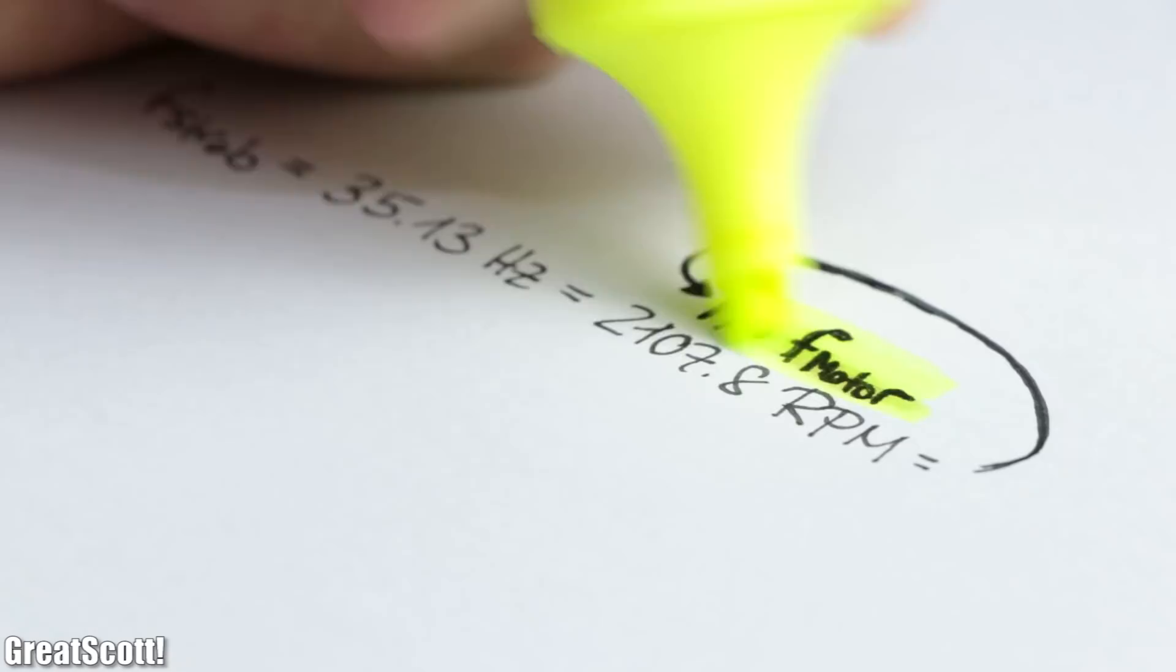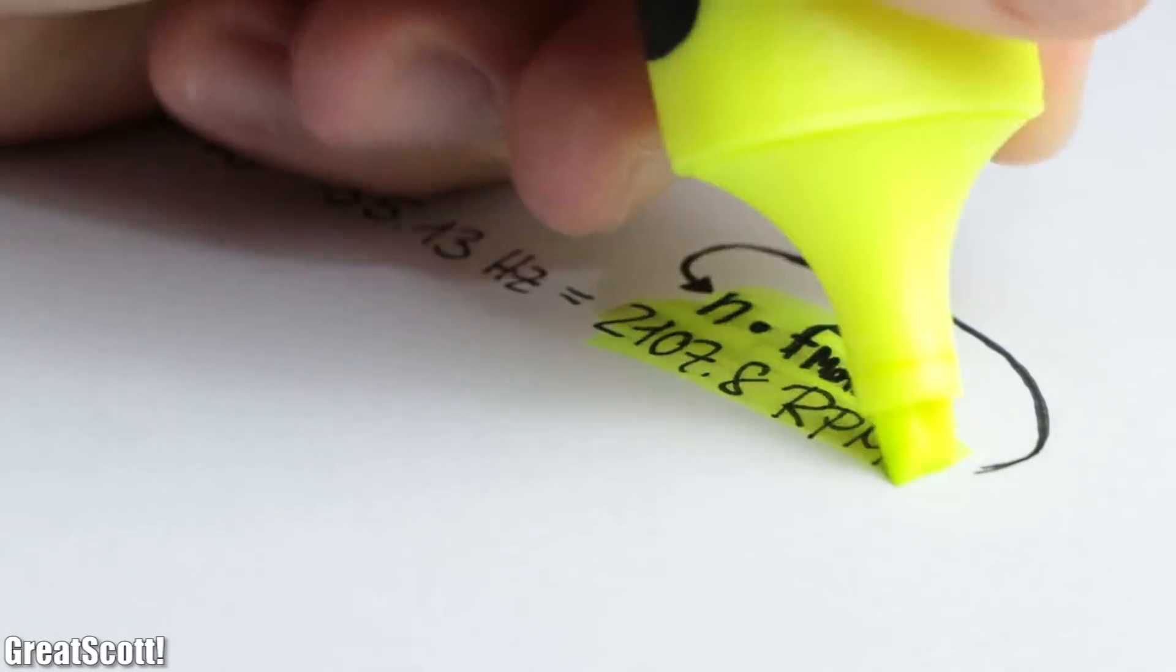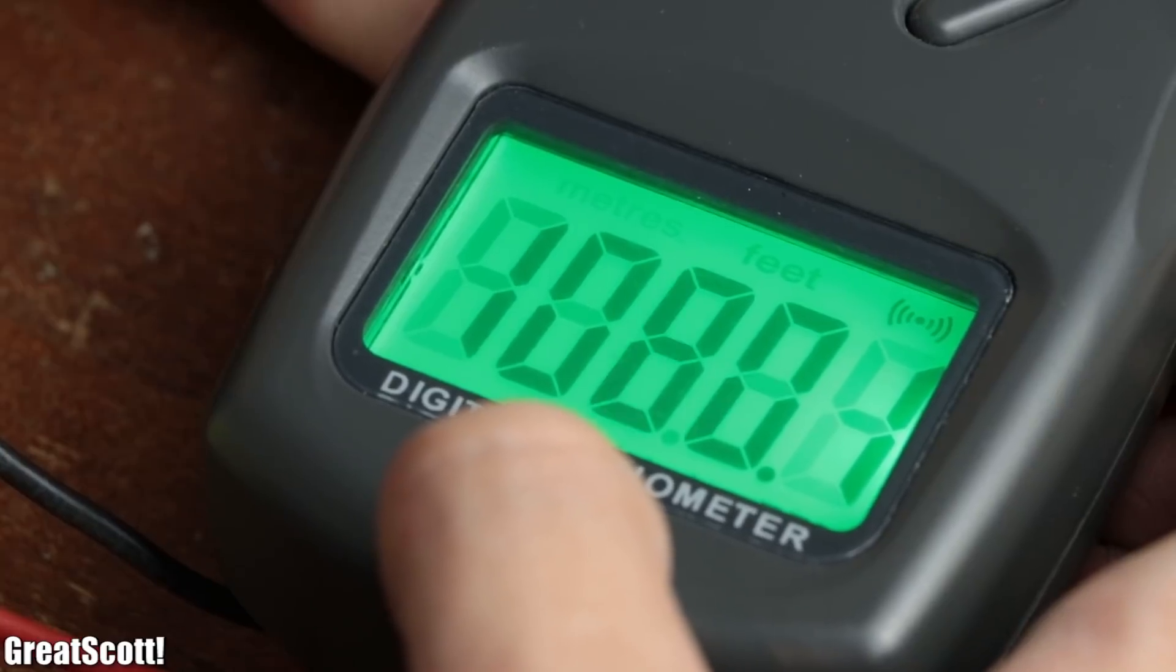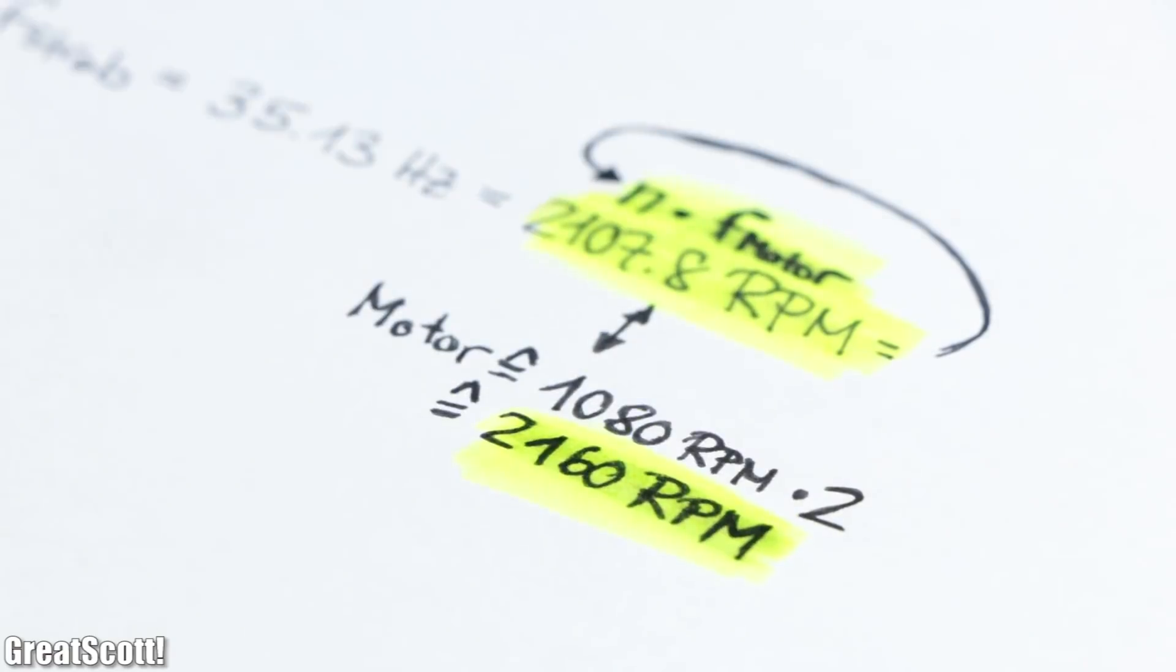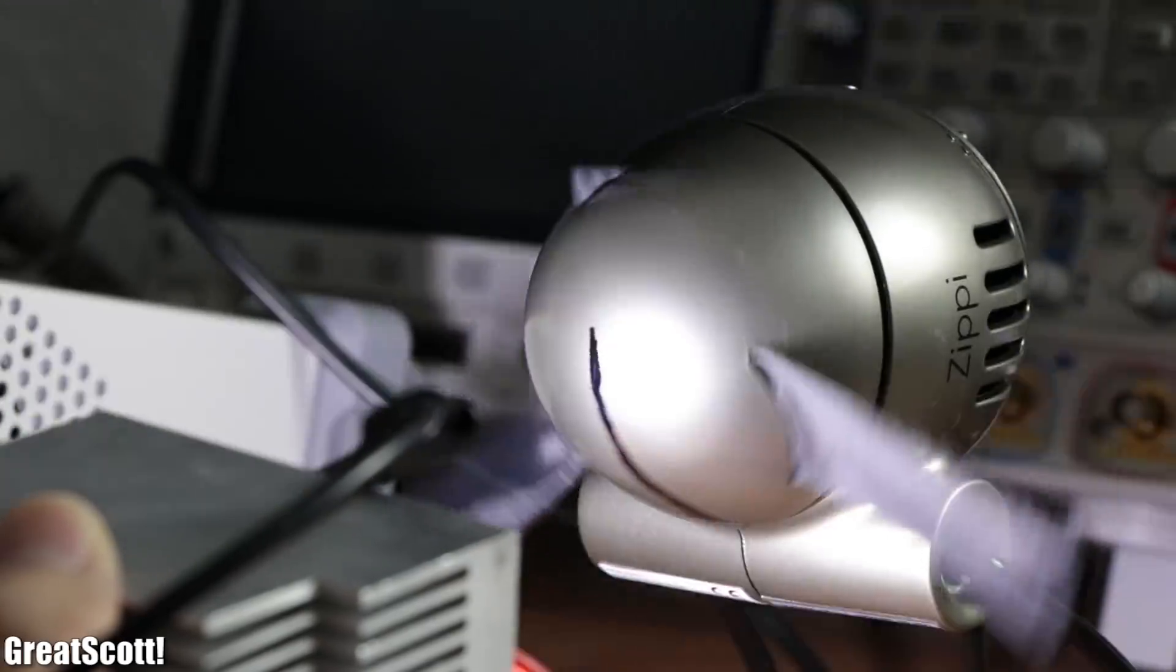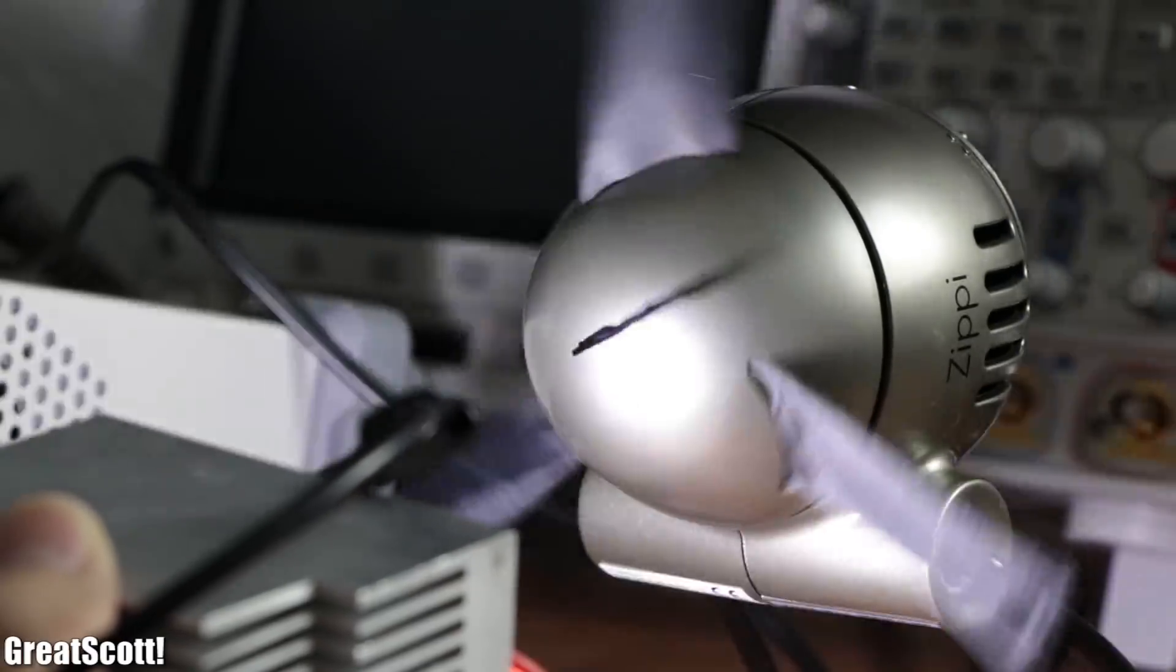That means the pulse frequency is a multiple of the rotation frequency, which after doing a small examination seems to be correct. And just like that, we can visually determine the rotation speed of a motor. Awesome!